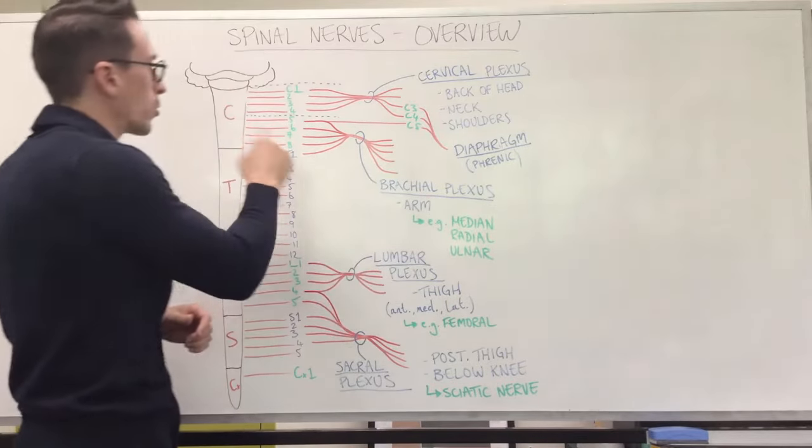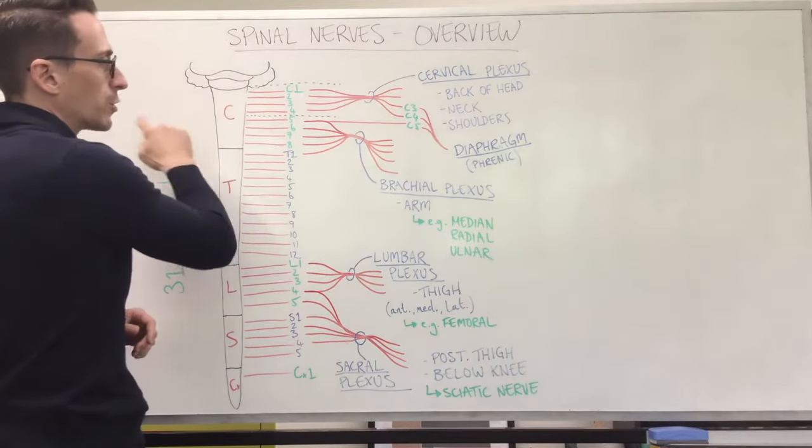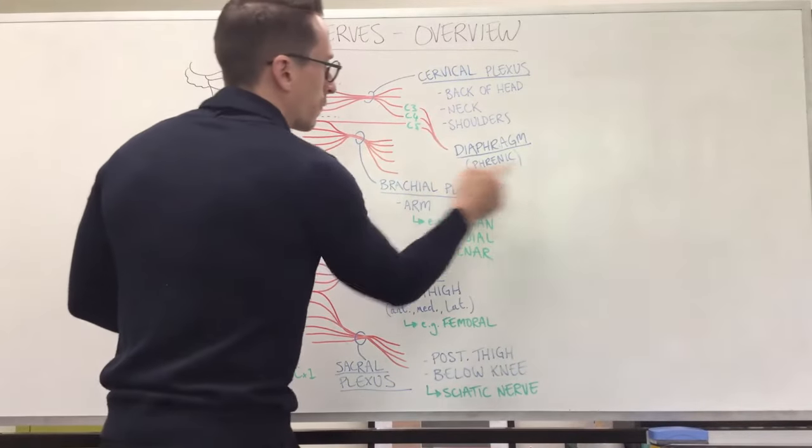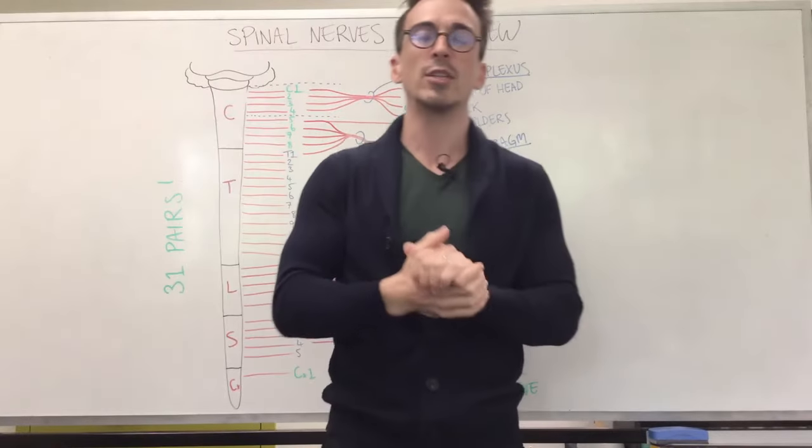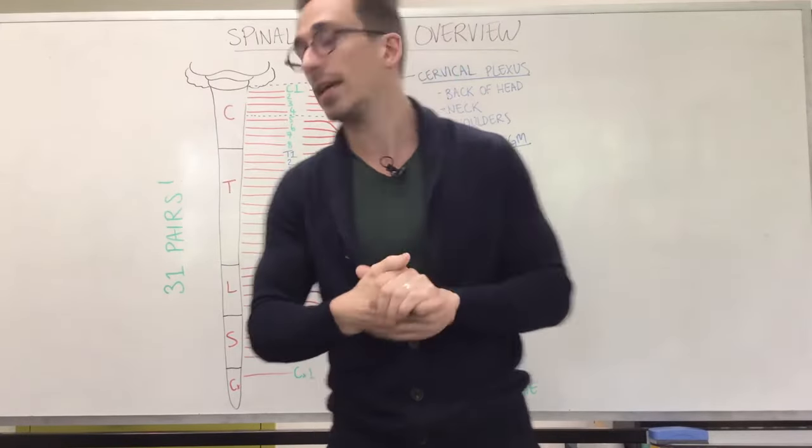If you had a spinal cord injury that damaged C3, C4, C5, then it means that your phrenic nerve won't innervate, the diaphragm will not contract, you will not breathe. That's why a lot of cervical spinal cord injuries can be deadly.